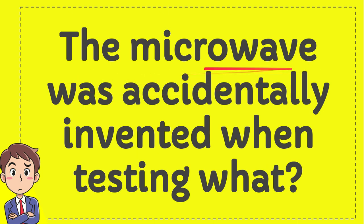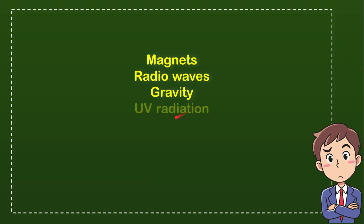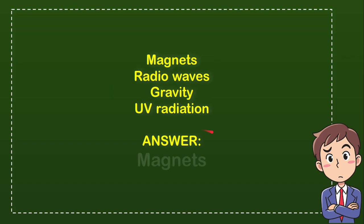The microwave was accidentally invented when testing what? Here is the list of options: the first option is magnets, the second option is radio waves, the third option is gravity, and the last option is UV radiation. The correct answer for the question is magnets.